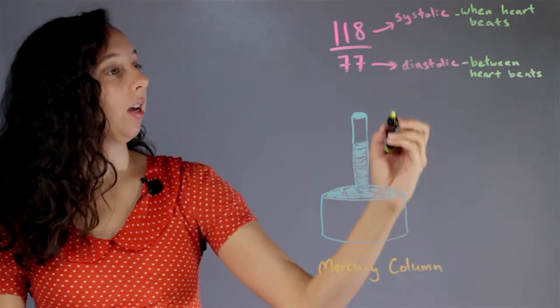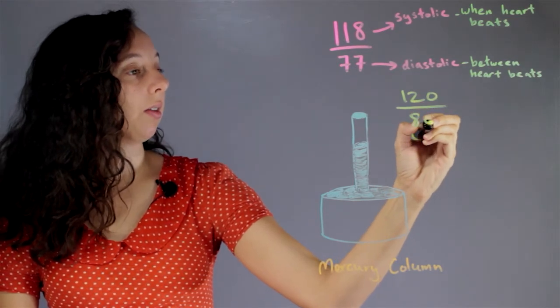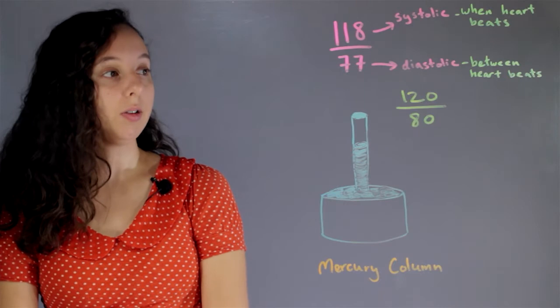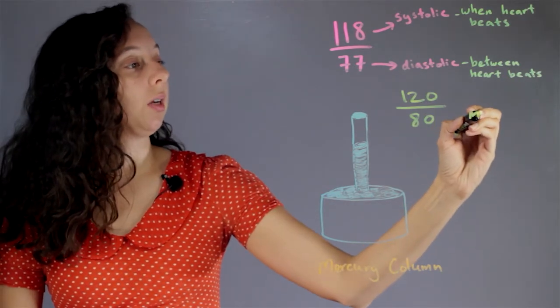So a healthy blood pressure is anything that's lower than 120 over 80. And the units that we use for blood pressure are always in millimeters mercury.